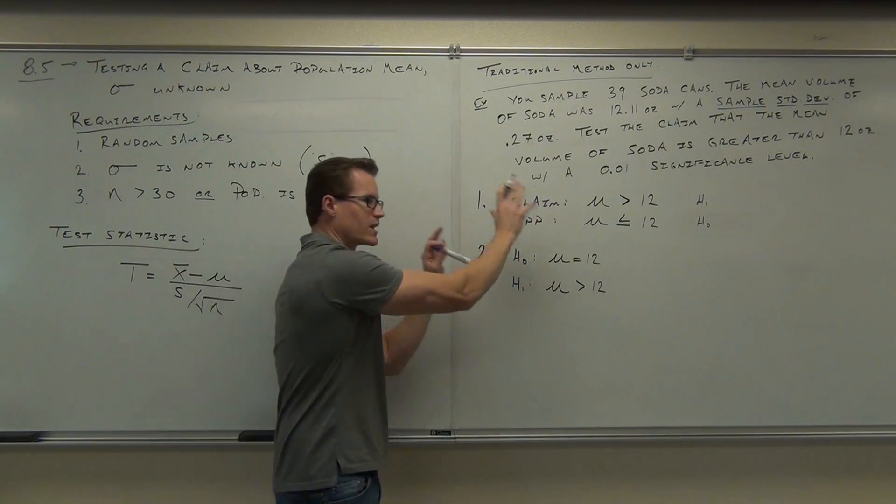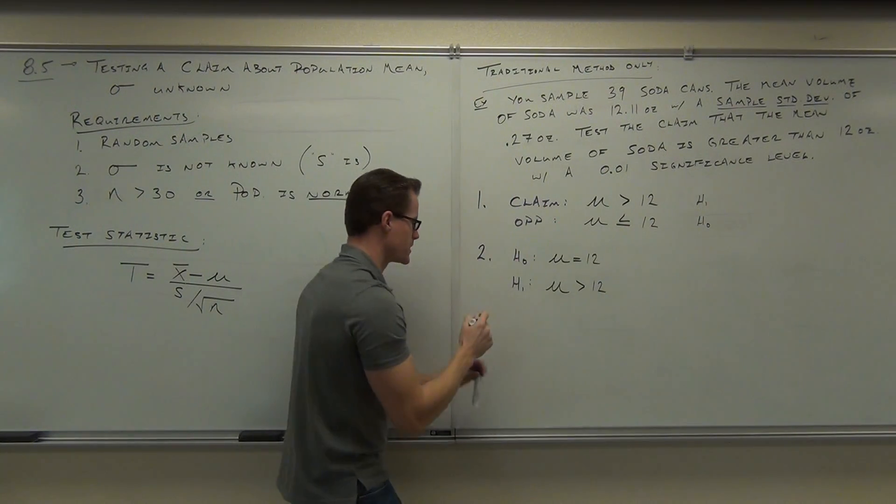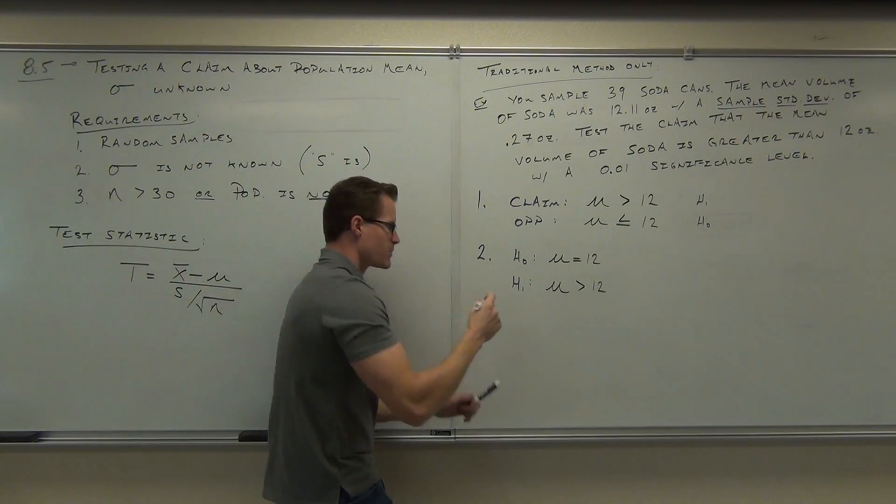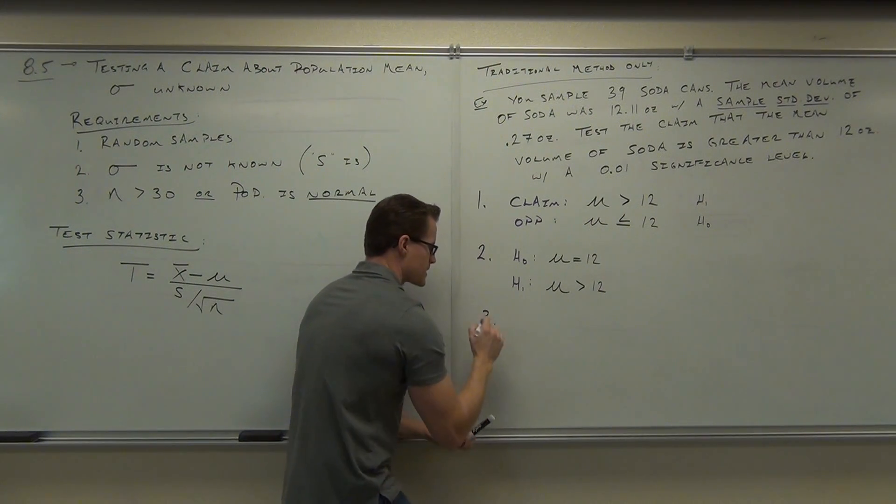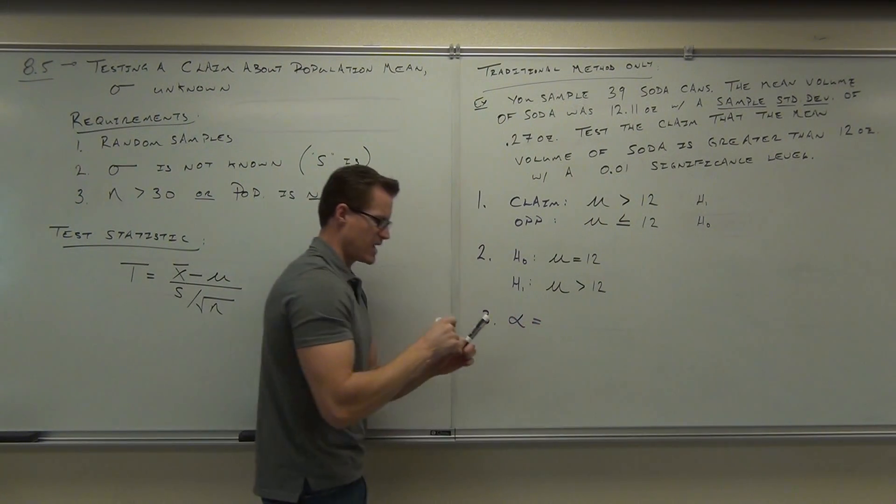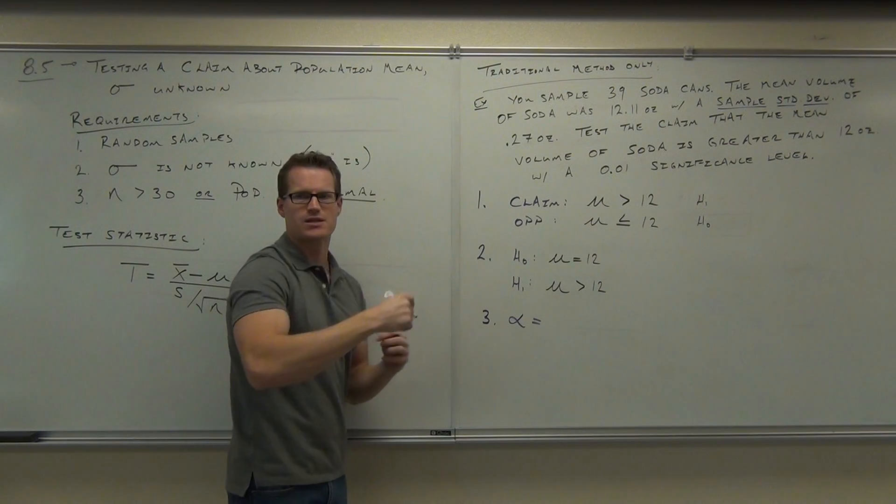First one, really important, not two-part, but really important step. Test number 3 is probably the easiest. Test number 3, you just give me alpha. It's 0.01. That stands for our significance level.